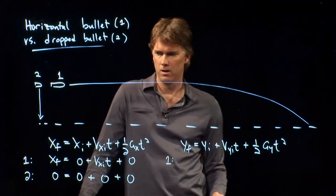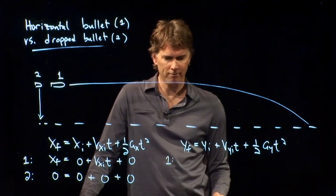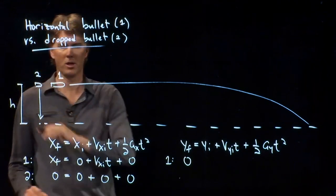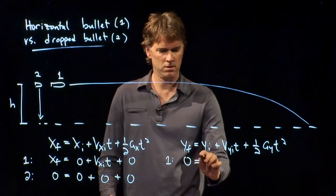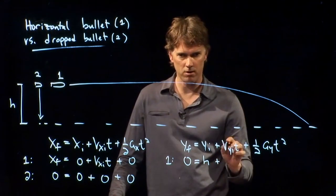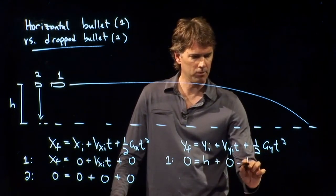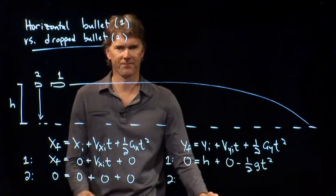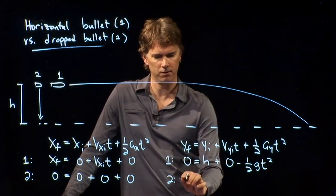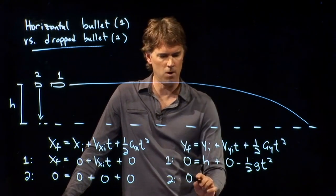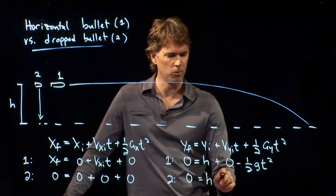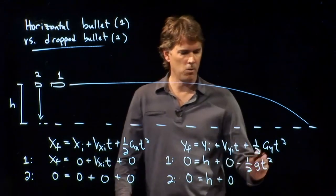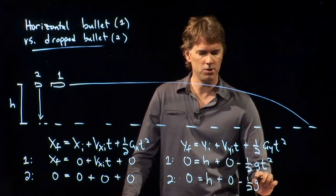What about the y-equation? For bullet number one: y-final is the ground, y-initial is however high we started — we can call that h, v_y-initial is zero since we fire it horizontally, and a_y is of course g. For bullet number two: y-final is zero, y-initial is zero — we dropped it from rest — and a_y gives minus one-half g t-squared.